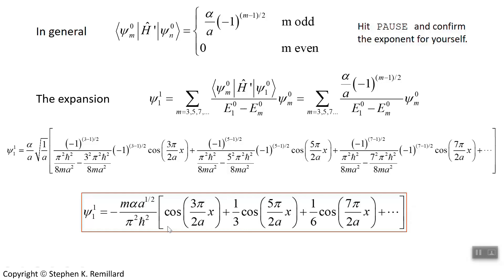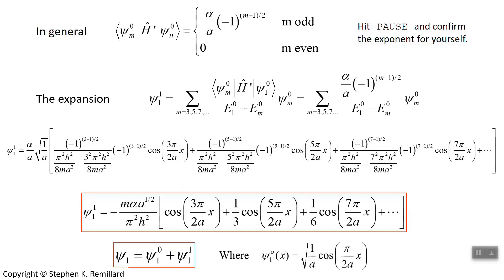Factoring out constants and canceling, we get the first order correction to the ground state wave function as an expansion on cosines. The first term in the expansion is cosine, the second term is one-third cosine, and the next is one-sixth cosine. This is the perturbation correction to the wave function, meaning it's already small — the largest term not shown is one-tenth the size of the leading term, so we disregard every term beyond those shown. Add this perturbation correction to the unperturbed wave function — the ground state wave function root 1 over a times cosine of pi over 2a times x — to get the new ground state wave function with the delta function perturbation in place.